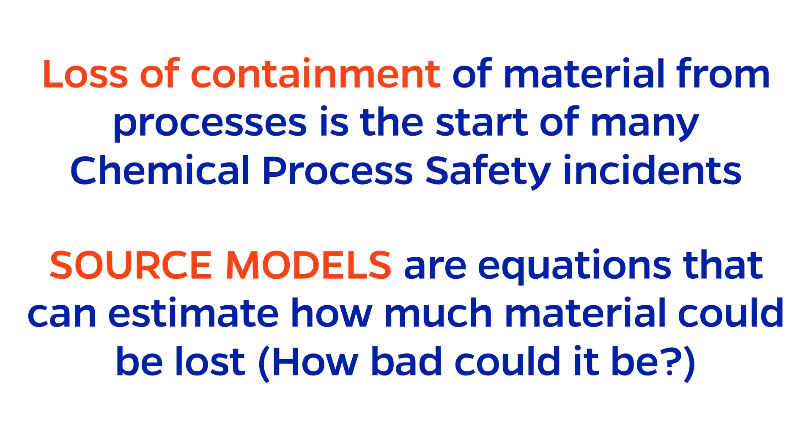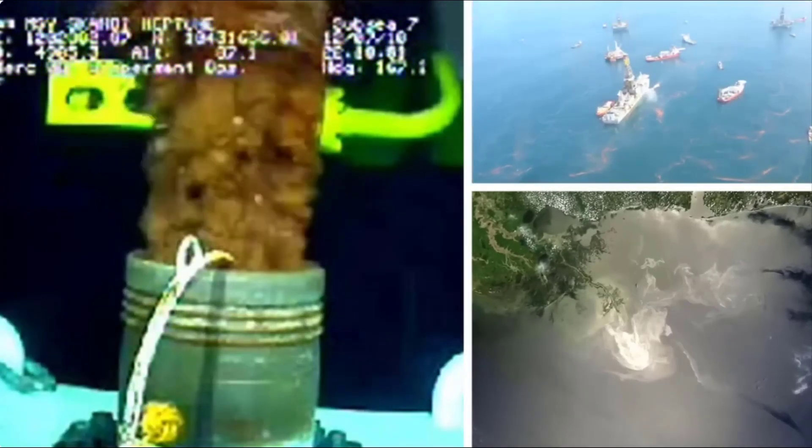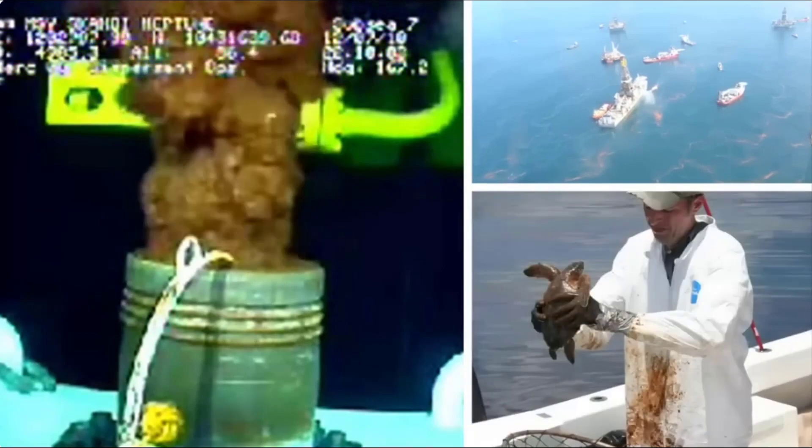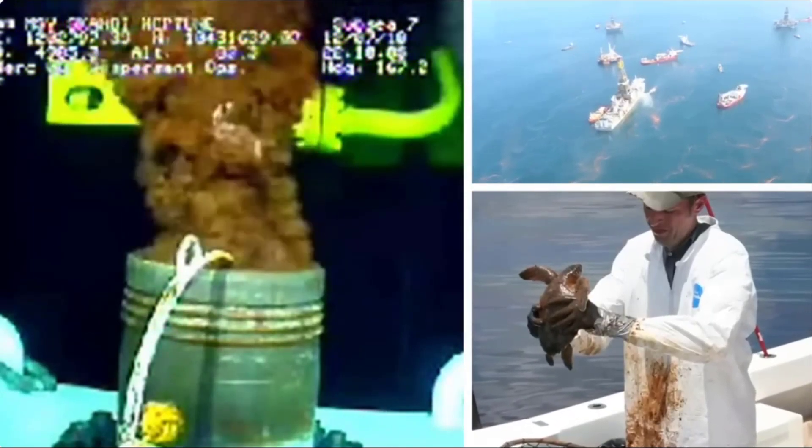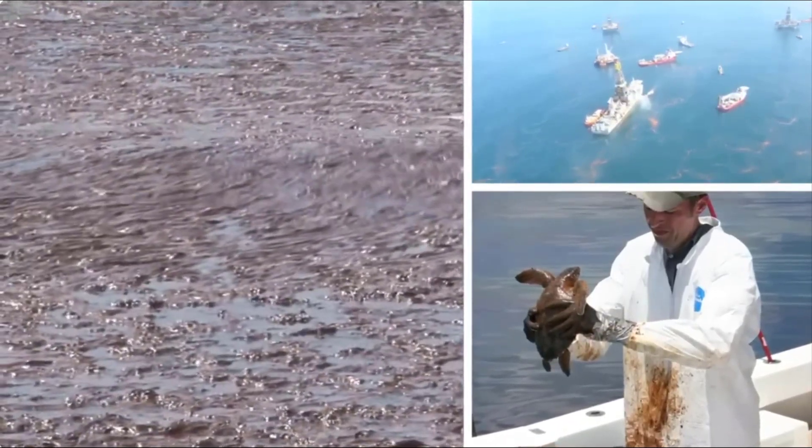A source model refers to an equation that estimates how much material could be lost. For example, when the news reports that 176 million gallons of oil were lost in the Deepwater Horizon oil spill, this was estimated by a source model.